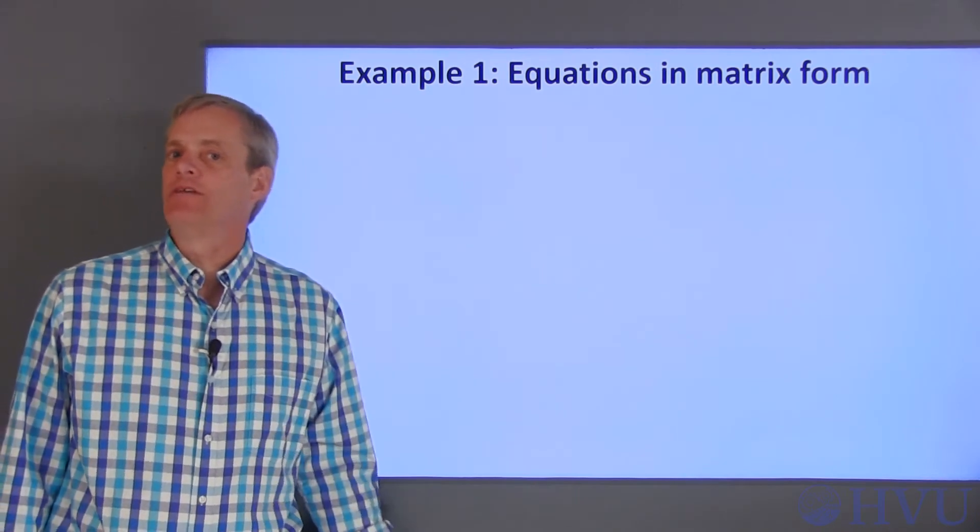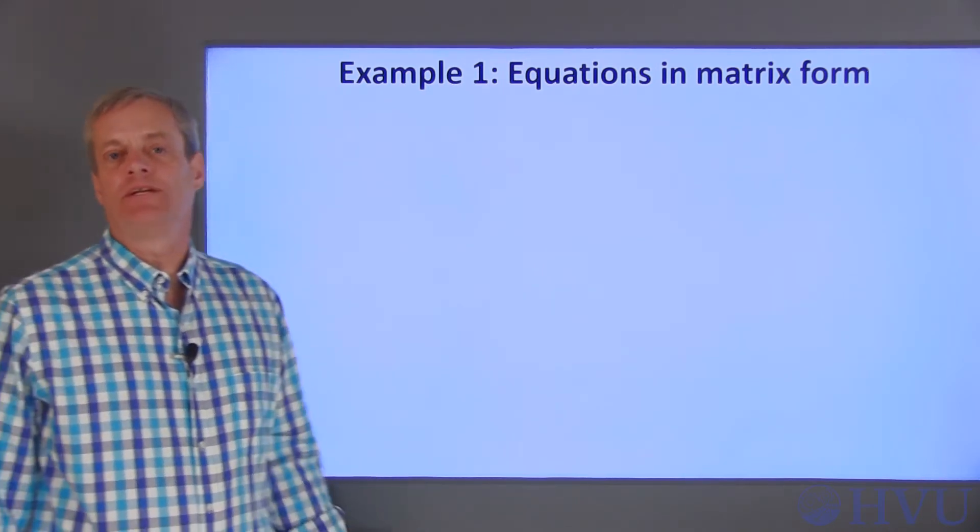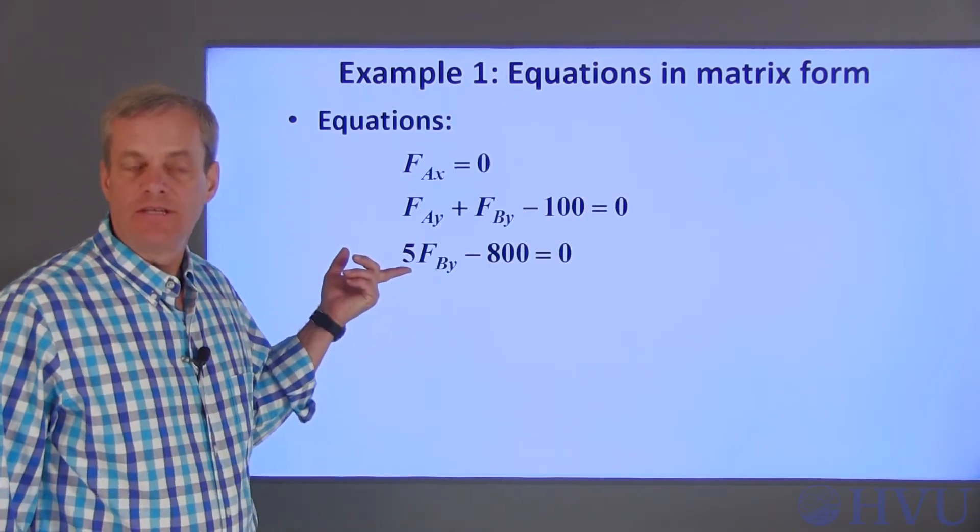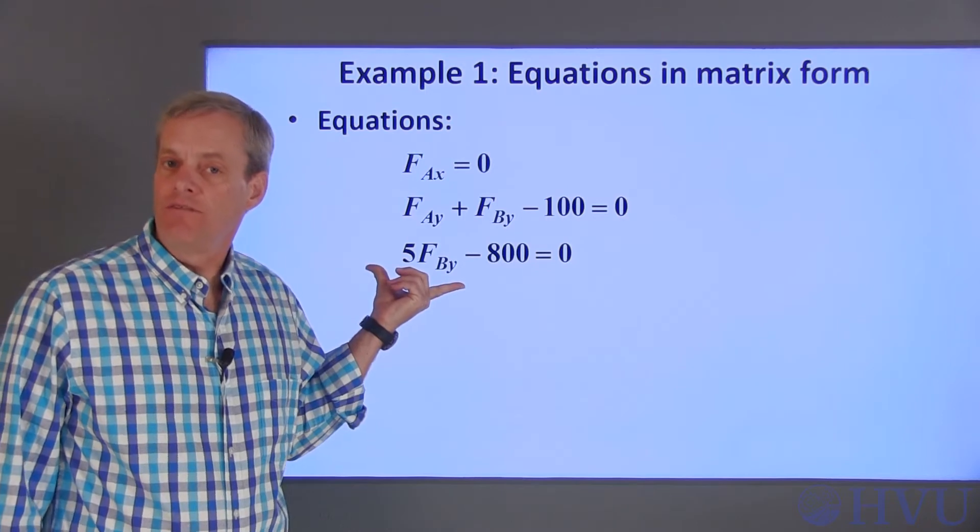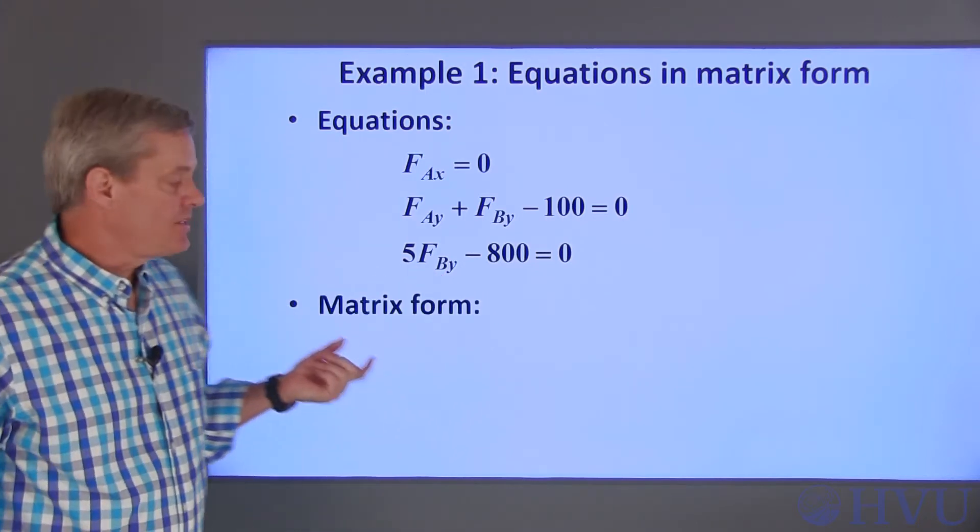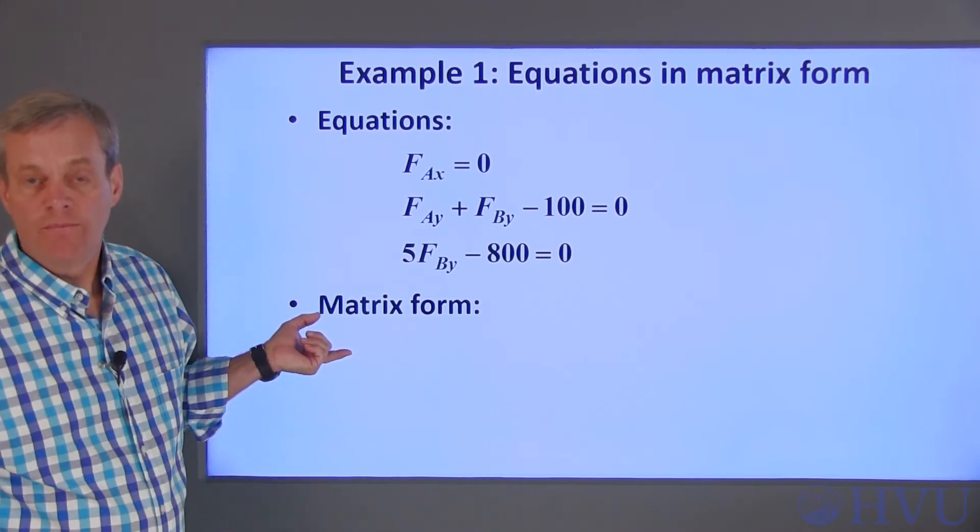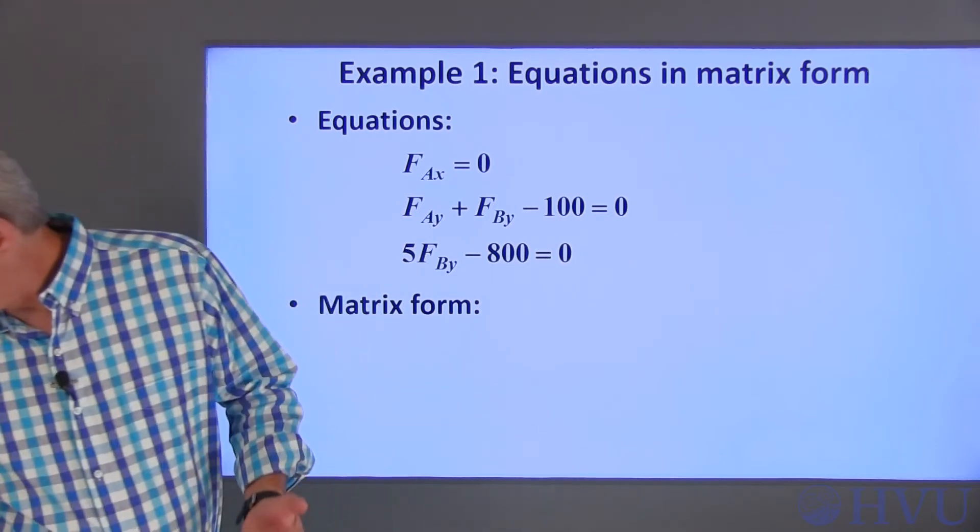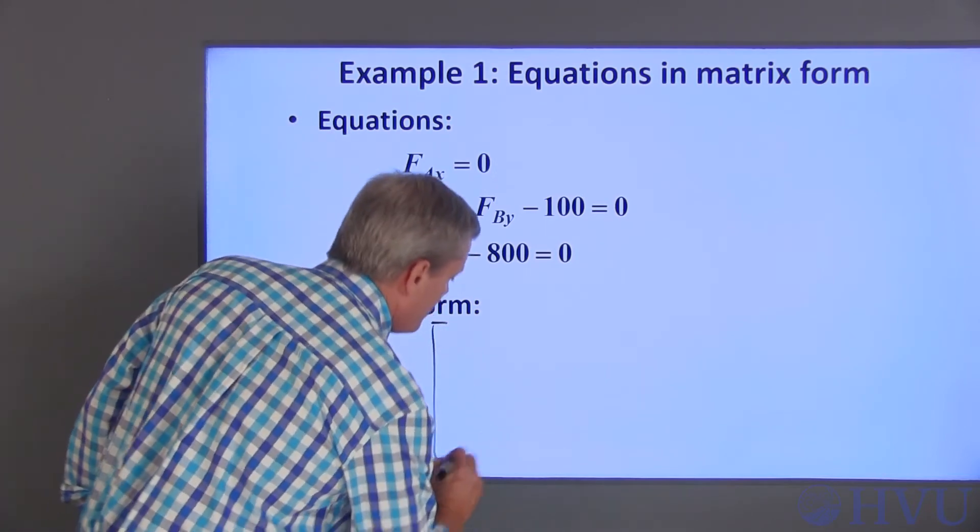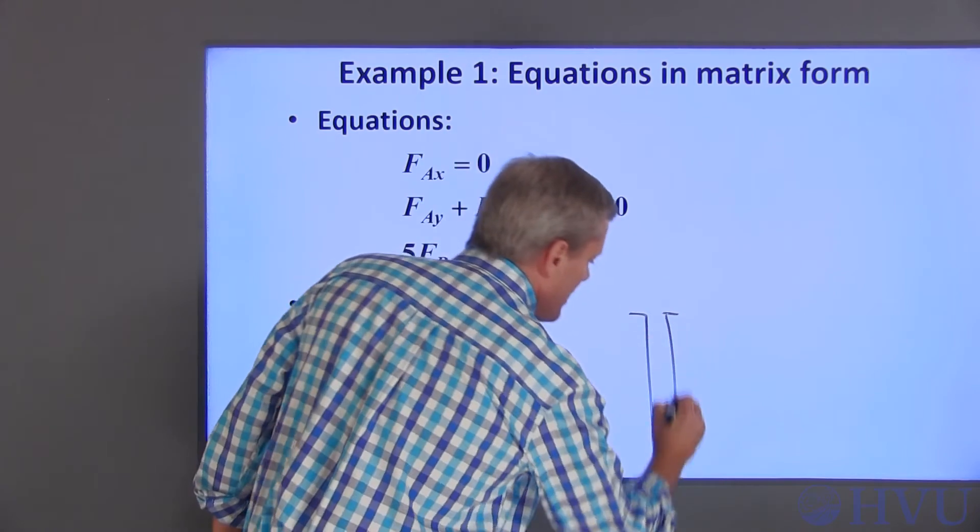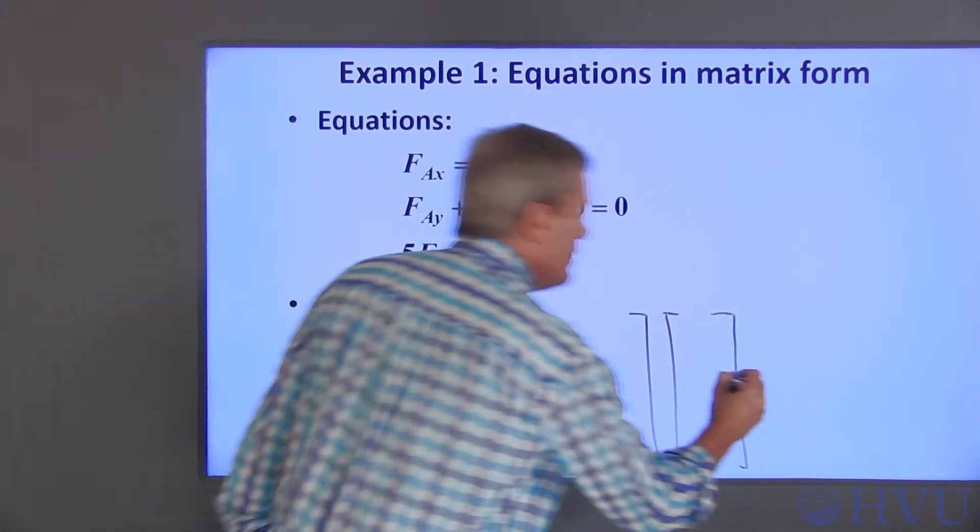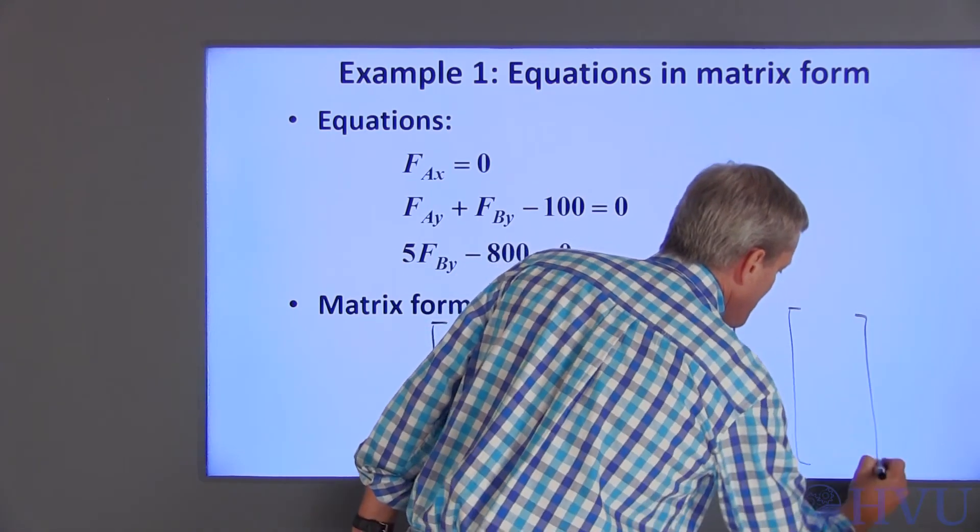Now that we've got the unknowns defined and the equations written, we can place them in a matrix. These are the equations governing the system. We want to use linear algebra techniques to solve the equations and find numerical values for the unknowns. This means that we need to write the equations in matrix form. Since there are three equations and three unknowns, this will be of the form of a three by three matrix A times a three element column vector X containing the list of unknowns is equal to a three element column vector B.